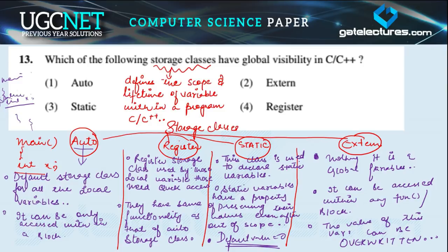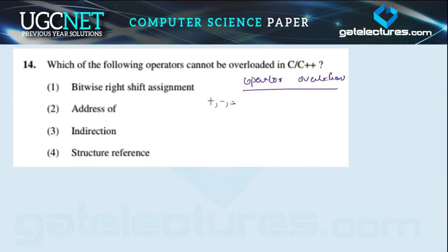Coming back to question 13: which of the following storage classes have global visibility in C and C++? Global visibility is only possible in the external storage class. So the correct answer is option 2. This question has already appeared two or three times in exams, so remember these short notes for all storage classes.